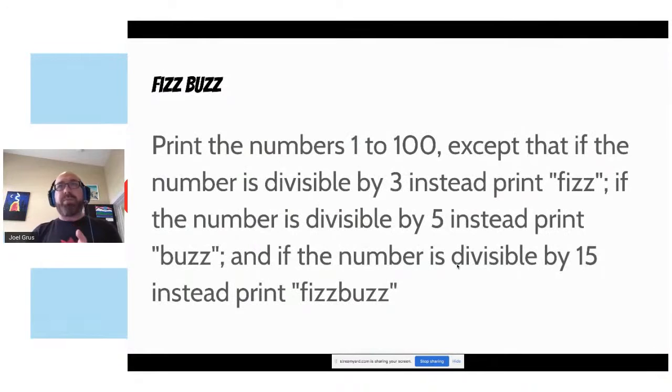Just to remind you, this is the problem. Print the numbers 1 to 100, except if it's divisible by 3 print Fizz, divisible by 5 print Buzz, and divisible by 15 print FizzBuzz. So that's the problem we're trying to solve. And we're going to solve it 10 different ways.